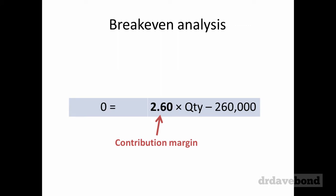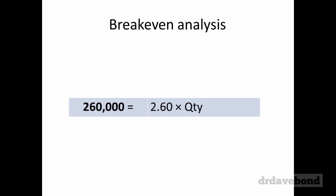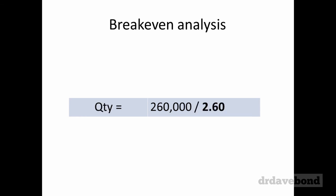We then take that $2.60 and put it into the formula. At breakeven, profit equals zero, so: 0 equals $2.60 times quantity minus $260,000. Adding $260,000 to both sides, swapping sides, and dividing by $2.60 gives the classic breakeven equation: breakeven quantity equals total fixed costs divided by contribution margin, which in this case is 100,000.